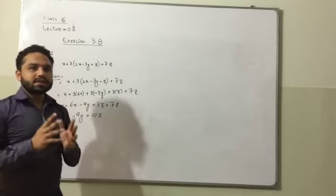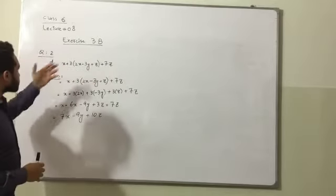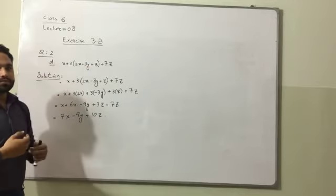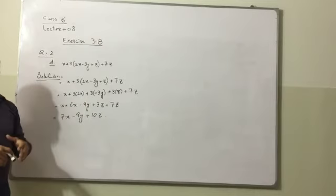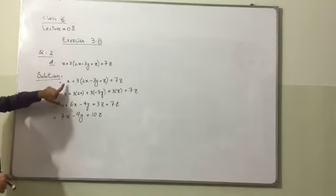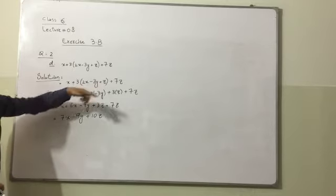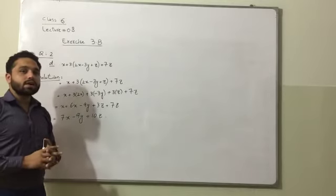We solved work example number 4 which is same as question number 2. So today we will solve this question and further learn about how we can simplify expressions. So we have x plus 3 multiplied by 2x minus 3y plus c plus 7z. Now we want to solve it.